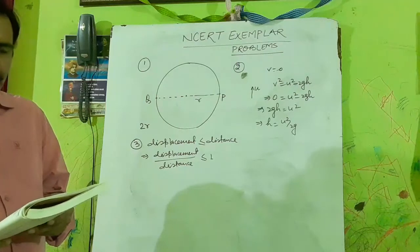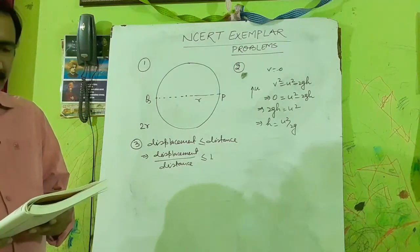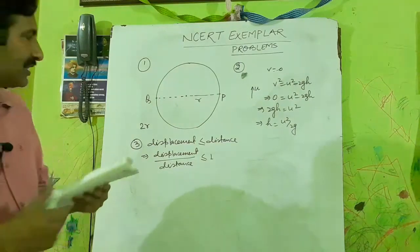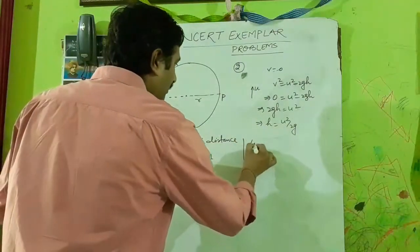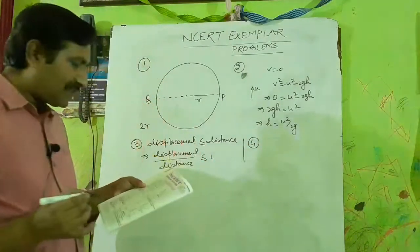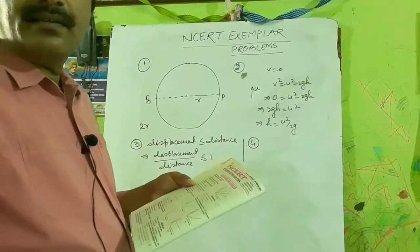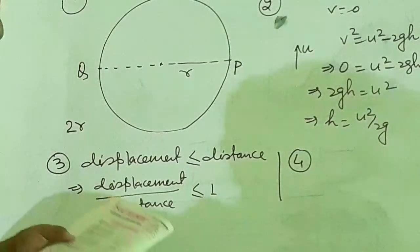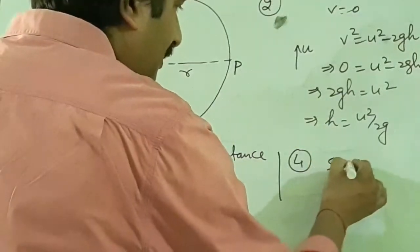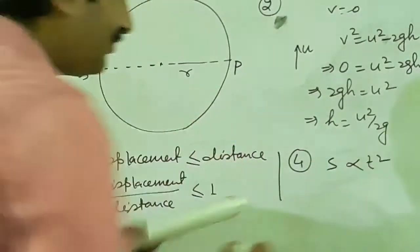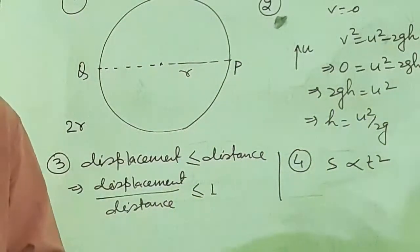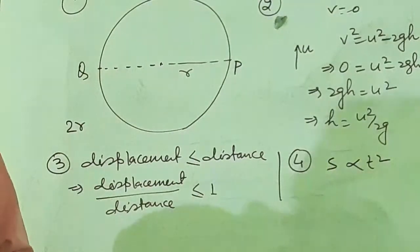Question number four: If the displacement of an object is proportional to the square of time, then the object moves with — options are: uniform velocity, uniform acceleration, increasing acceleration, or decreasing acceleration. Displacement S is proportional to T².